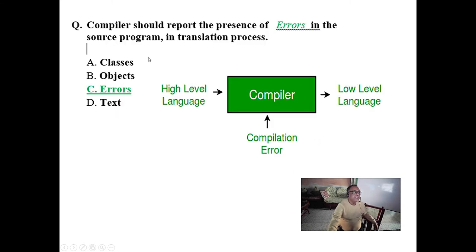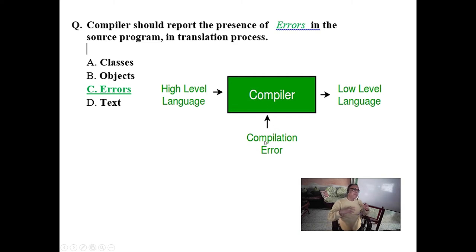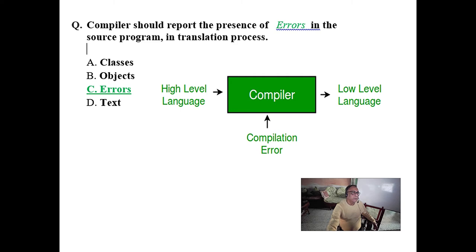A compiler should report the presence of errors in source programs. While a compiler can detect classes and objects, the main purpose is error detection. After the compiler runs successfully, then you can think of classes and objects. The final essential thing is errors — if there is any single error, the compiler should not compile. Not only that, it will report errors in such a way that the programmer can correct them: not just one error at a time, but a bunch of errors, reporting at which line the error is, whether a semicolon is missing, or a bracket is missing. So the answer here is errors.